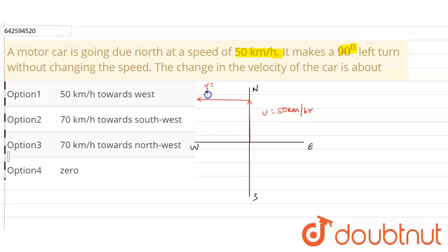Velocity final, let us say this is the initial, so it will be 50 kilometer per hour. So we have to calculate the change in the velocity of the car, so the change in the velocity...